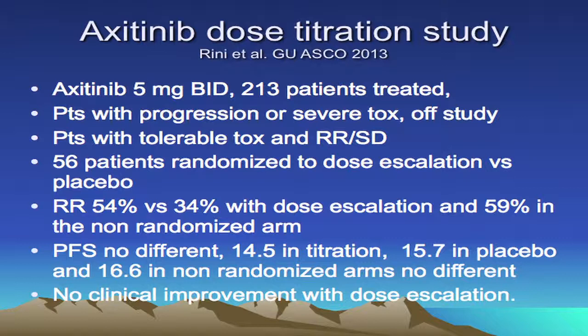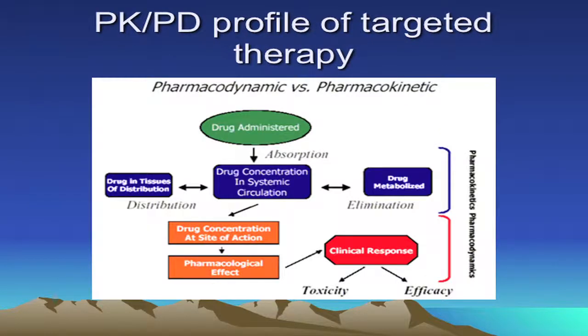Female gender and low body weight — particularly people with significant weight loss — are more likely to show this kind of significant increase in effective drug exposure. Right now we do not have any good predictive markers to identify upfront who is at increased risk of toxicity. Regarding the PK/PD profile of targeted therapy, it is fairly similar across agents, as you are invested in the long-term treatment of patients who are benefiting.